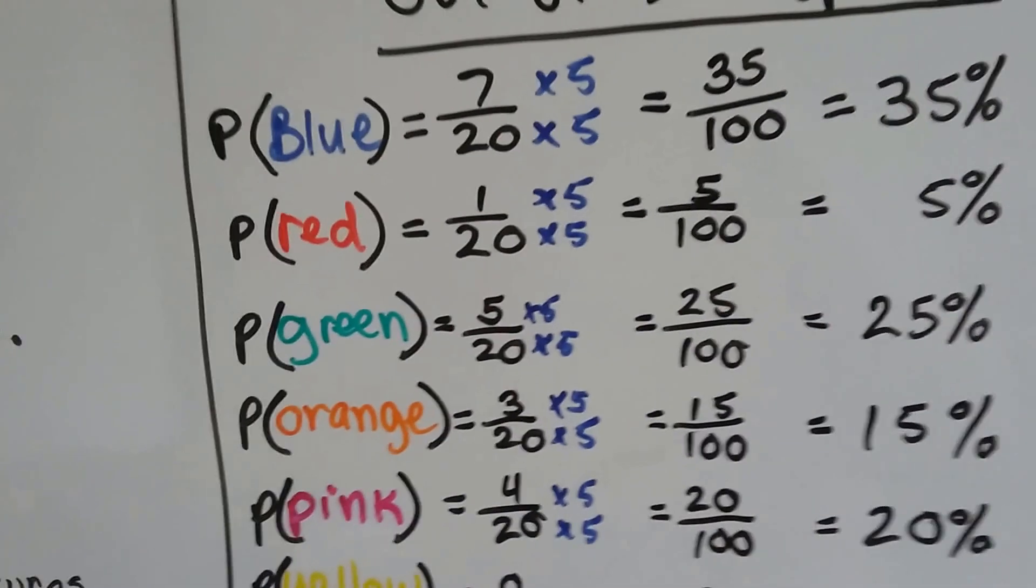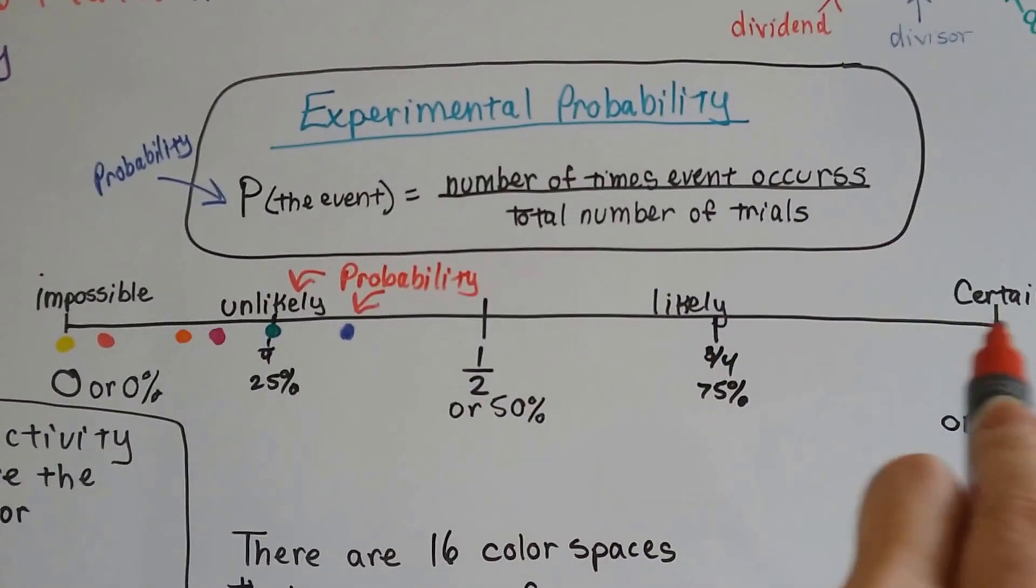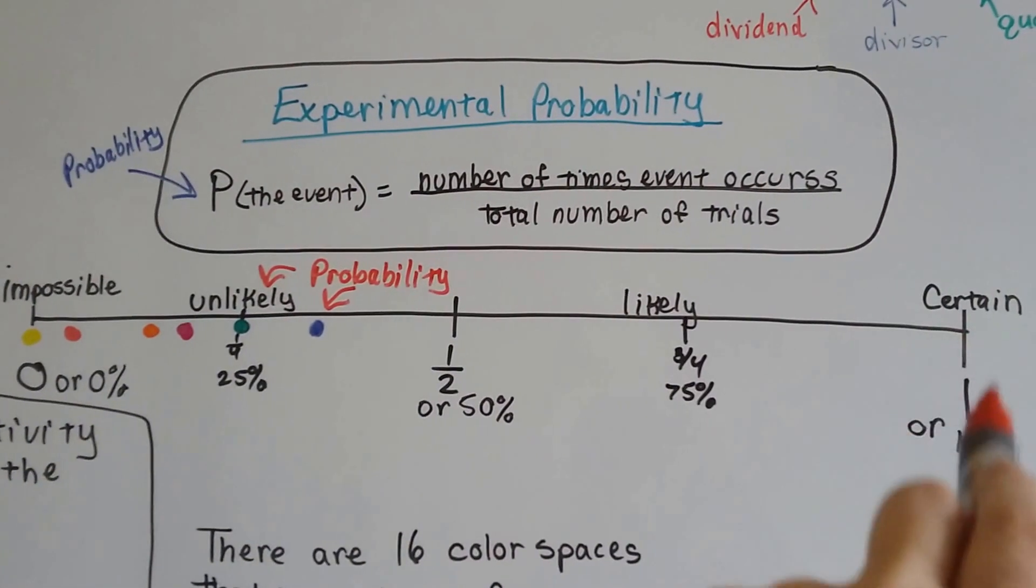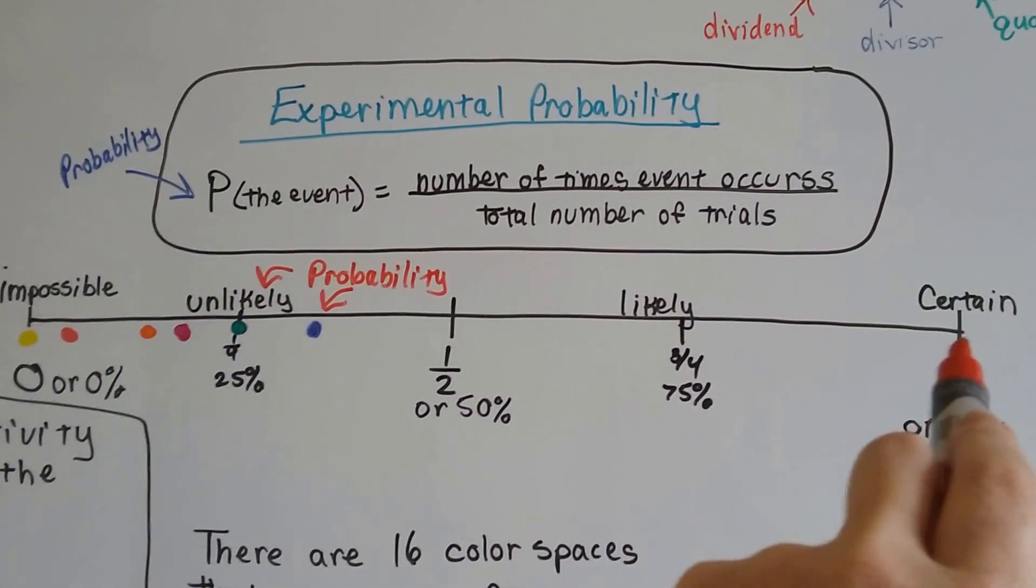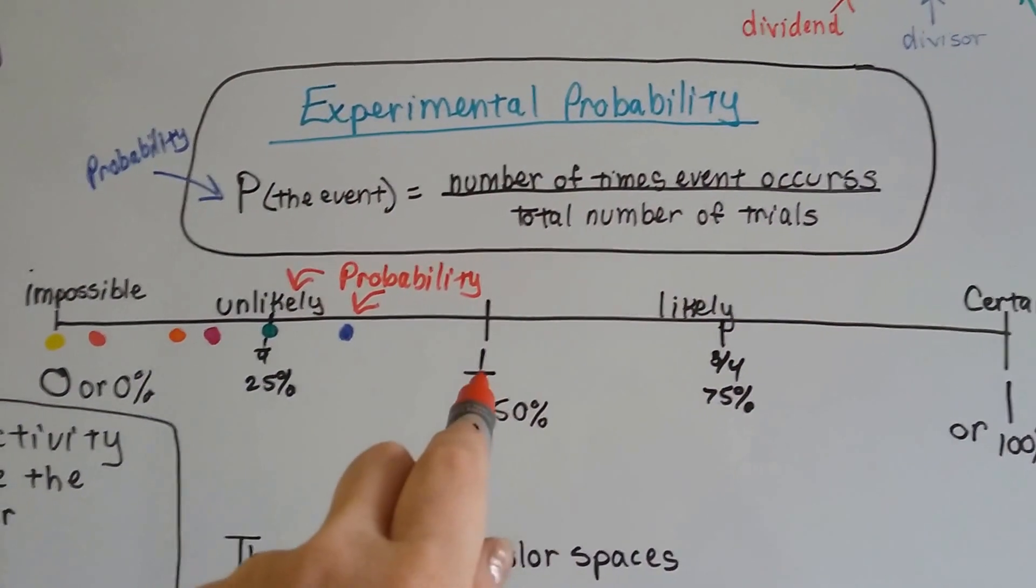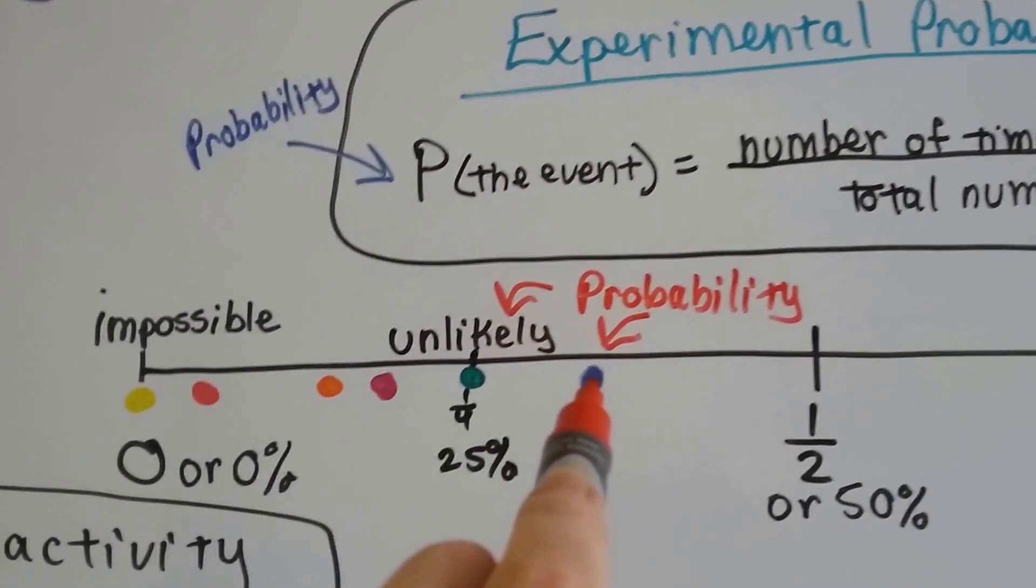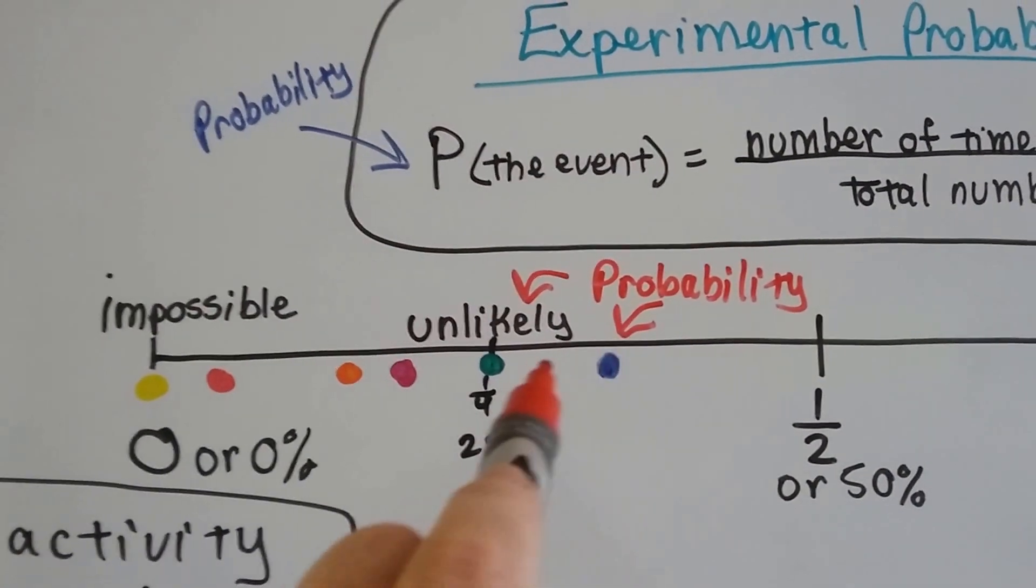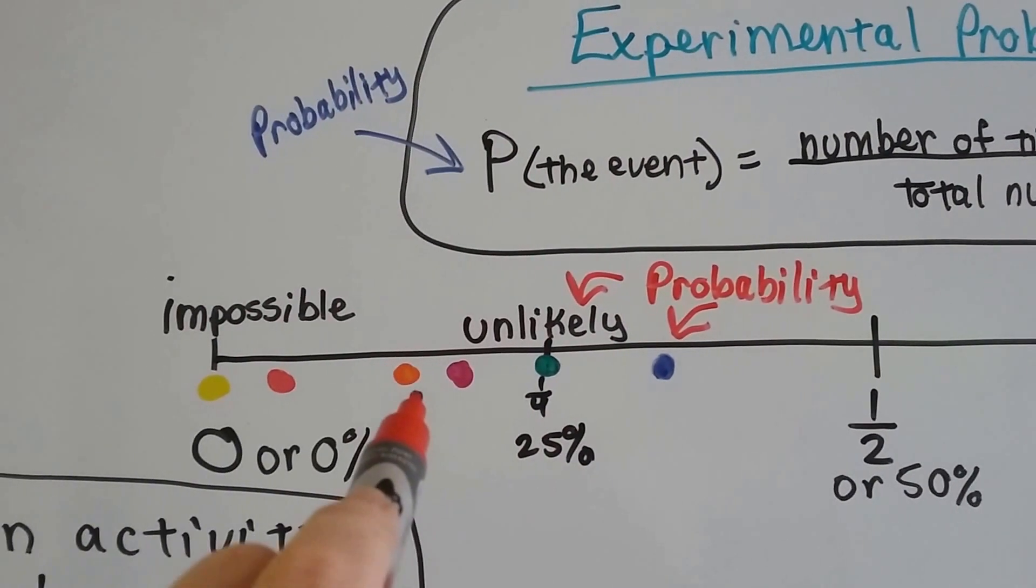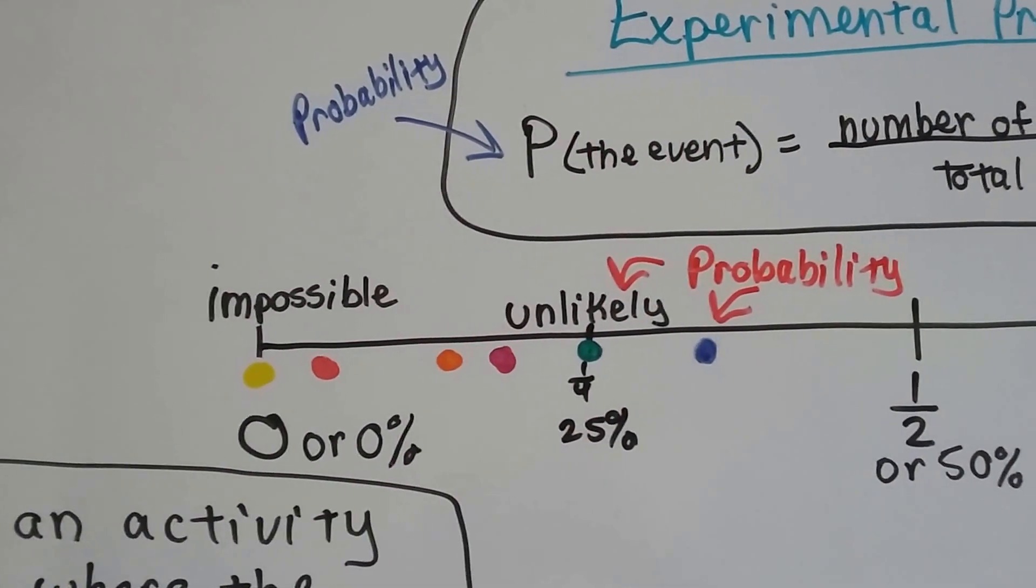So I was able to put this on a chart right here for probability, with zero is impossible, and one or 100% is certain. Zero to one. Half would be 50% of a chance that it would happen. And this is where they landed. The blue landed here at 35%. The green landed here at 25%. The pink landed here at 20%. The orange landed at 15%. The red at 5%, and the yellow at 0%.